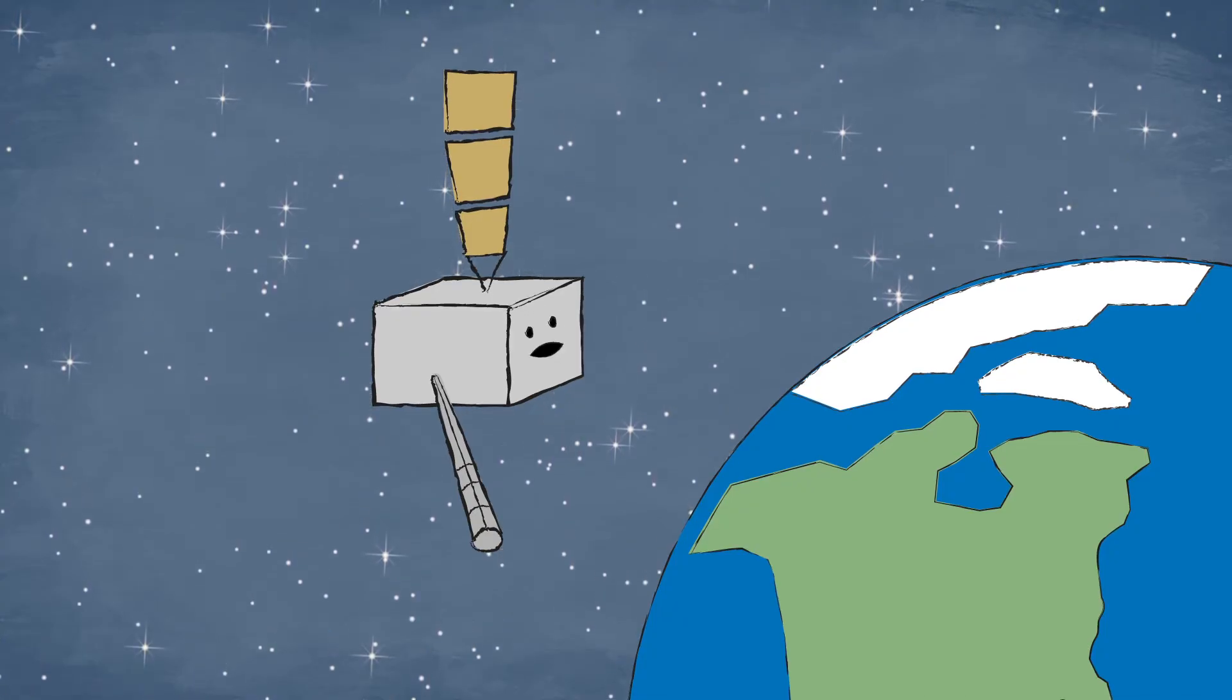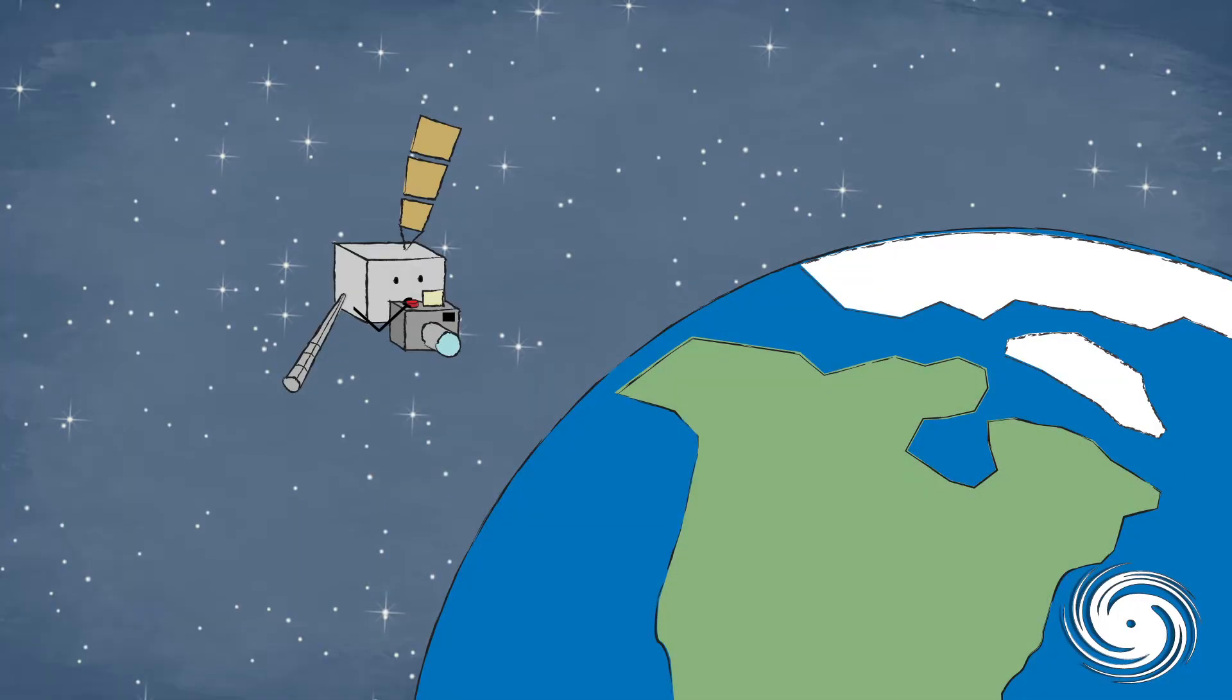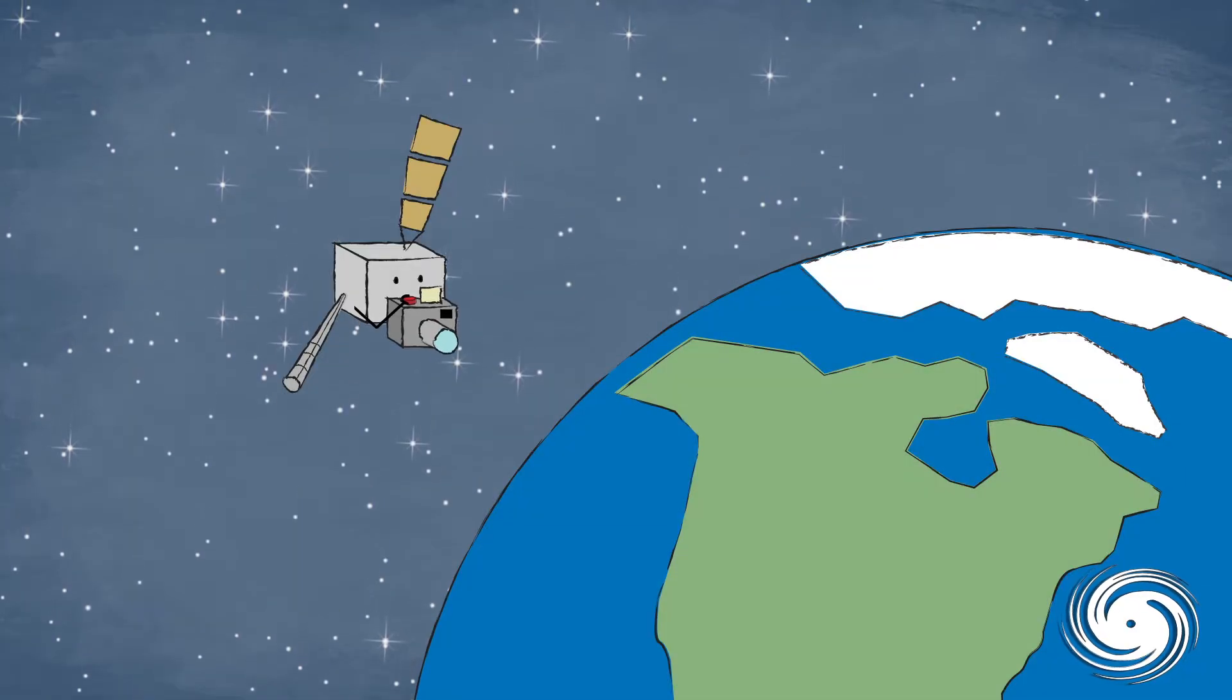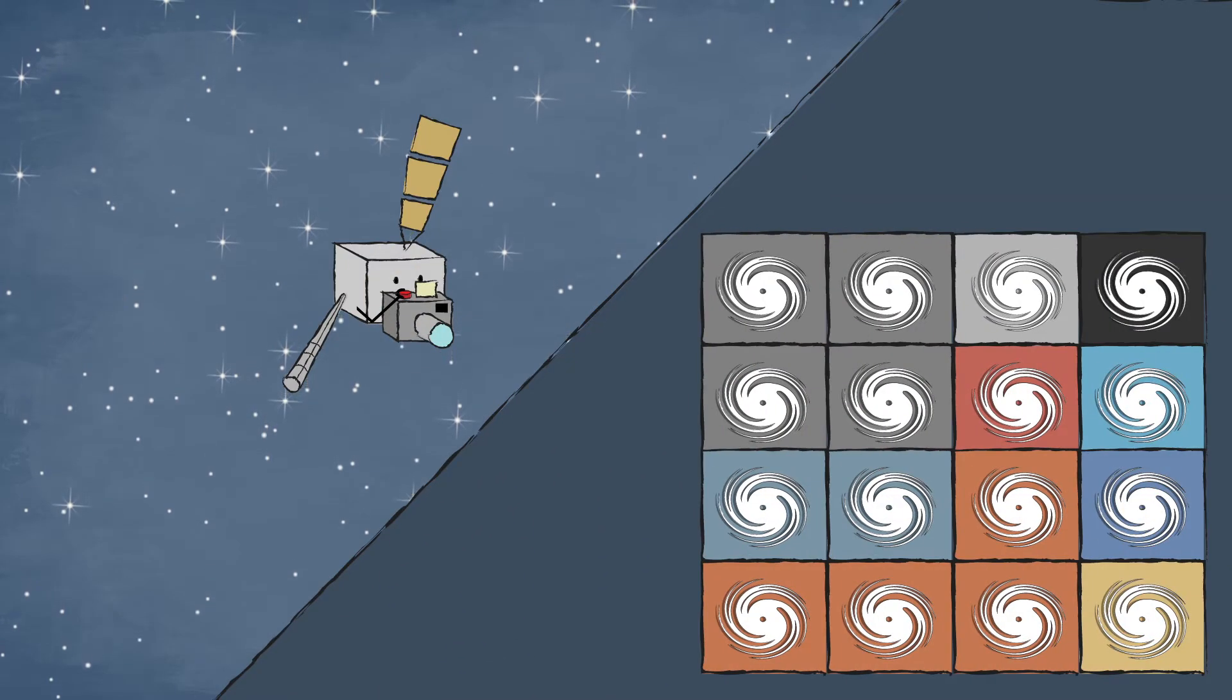Hello, I'm a GOES-R series weather satellite orbiting 22,000 miles above Earth. I can see a lot of cool stuff from up here, and I take pictures of it with my spiffy camera that has 16 different settings.